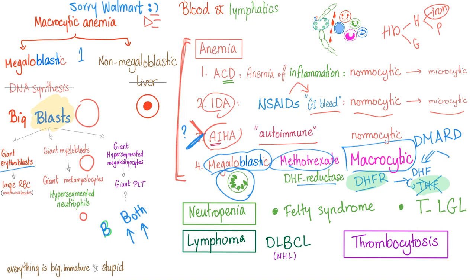If you're just getting started in medicine and I ask what kind of anemia you see in Rheumatoid, and you answer anemia of chronic disease, I'll be happy. But if you're a fourth-year medical student or a resident and you only mention anemia of chronic disease, that's not enough. Because yes, anemia of chronic disease is the most common one, but we also have iron deficiency anemia, autoimmune hemolytic anemia, and megaloblastic anemia.